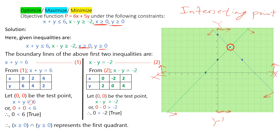The intersecting point is where two lines meet — the two lines intersecting point. This is the intersecting point.